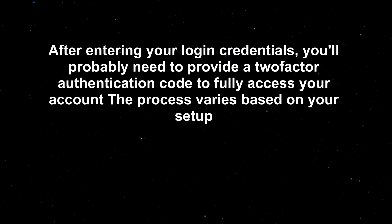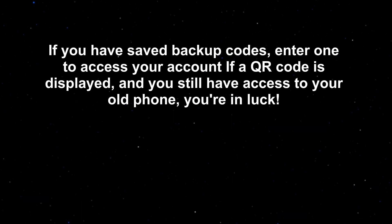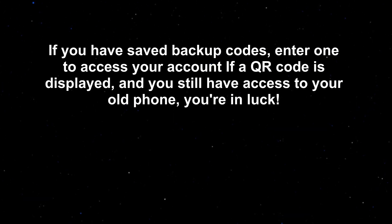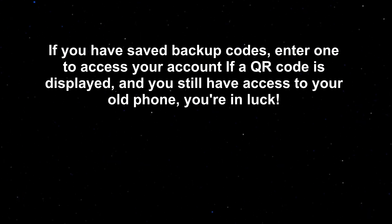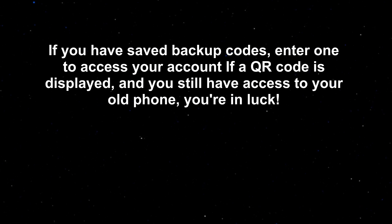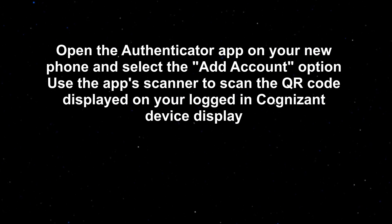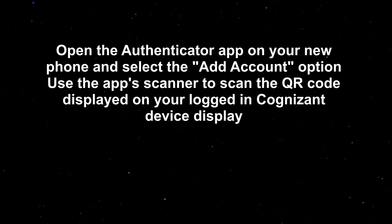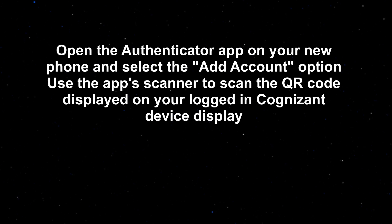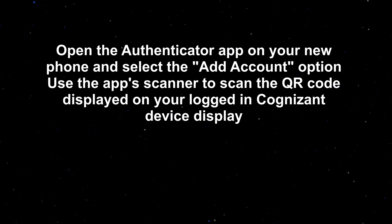The process varies based on your setup. If you have saved backup codes, enter one to access your account. If a QR code is displayed and you still have access to your old phone, you're in luck. Open the authenticator app on your new phone and select the add account option. Use the app scanner to scan the QR code displayed on your logged-in Cognizant device.